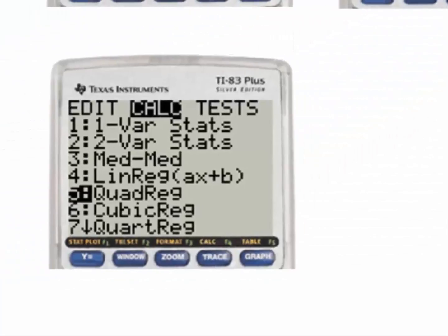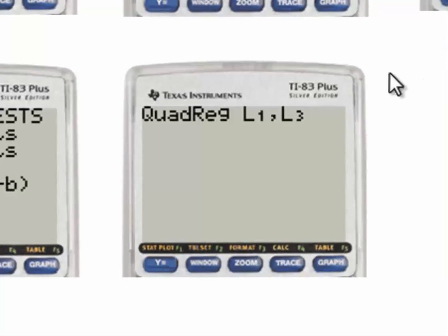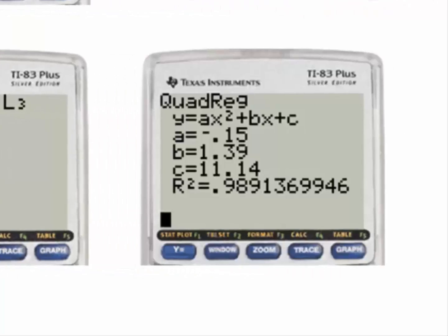Next to do the quadratic regression from the home screen, again we want list 1 comma list 3. And here we have our quadratic regression model. R squared is higher, it's 0.989.